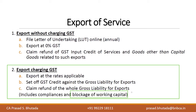The second option is charging GST while exporting — typically at 18 percent — and then claiming a full refund including GST paid on capital goods like laptops. This option is less preferred because it involves more compliance, requires continuous proof submission, and most importantly causes working capital blockage: you must first pay the 18 percent GST, and only receive a refund once the authority approves it. If the refund is not sanctioned, the entire GST amount is blocked.